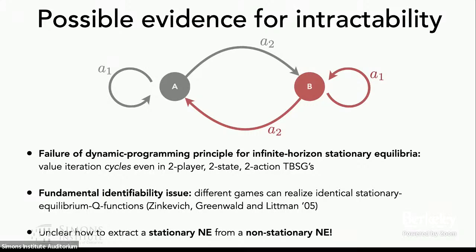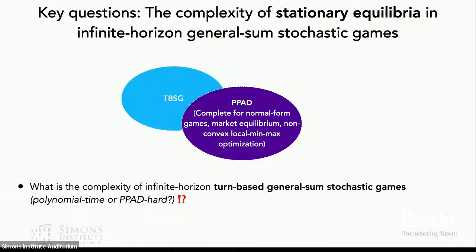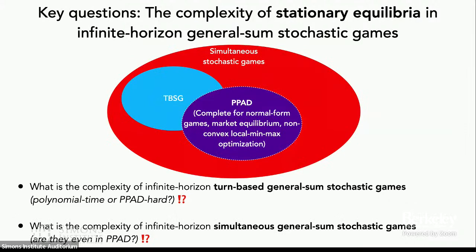The evidence going both ways leads us to a very natural question in the context of stationary Nash equilibrium: what is the complexity of infinite horizon turn-based general sum stochastic games when what we care about are stationary Nash equilibria? In particular, we're interested in understanding whether such equilibria are computable in polynomial time or are instead intractable. A related, more subtle question is what is the complexity of simultaneous stochastic games — while these are PPAD hard since they strictly generalize normal form games, what we do not know is whether stationary equilibrium computation lies in PPAD as well.